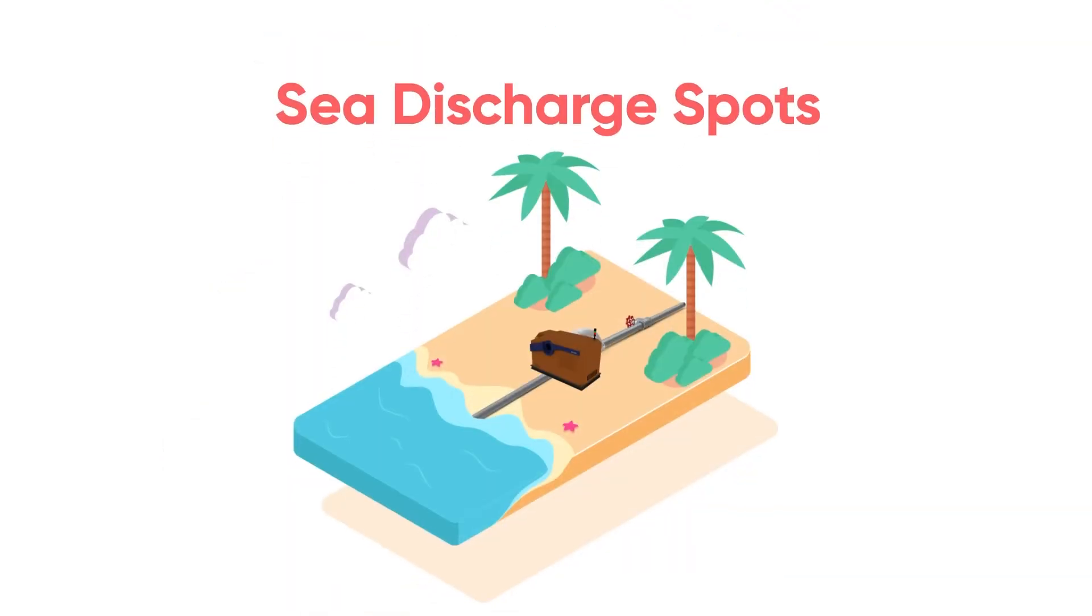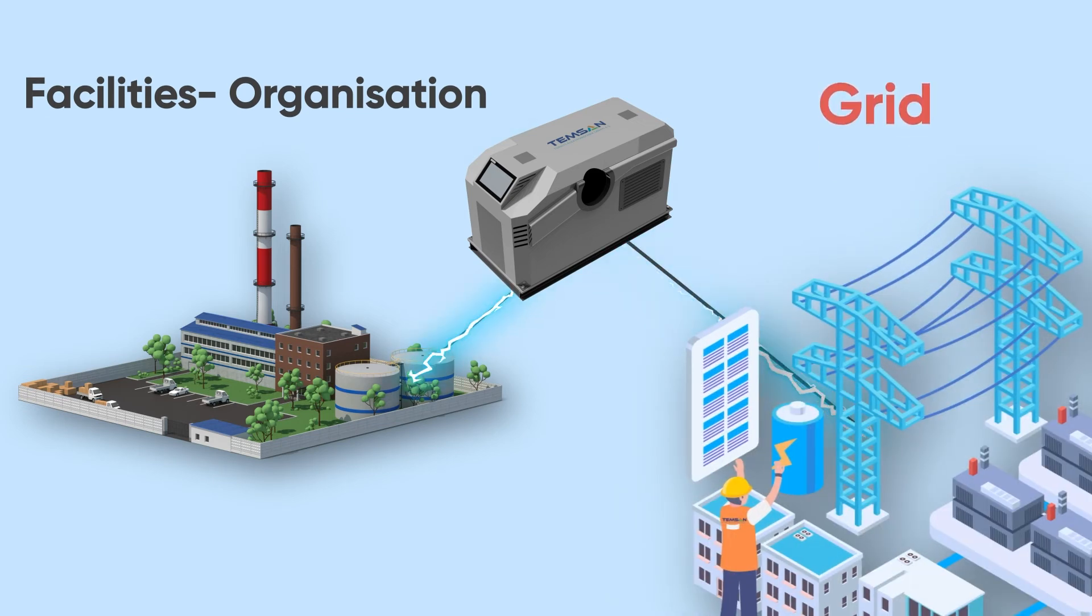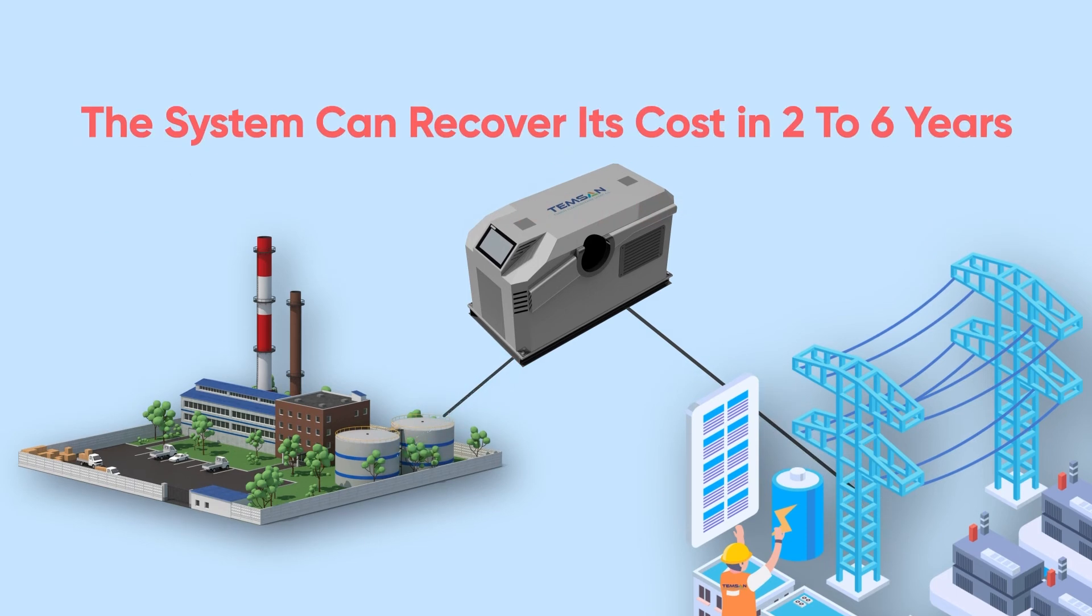At the seed discharge spots. The power generated can be used for consumption of houses and facilities or supplied to the grids. The system can recover its cost in 2 to 6 years.